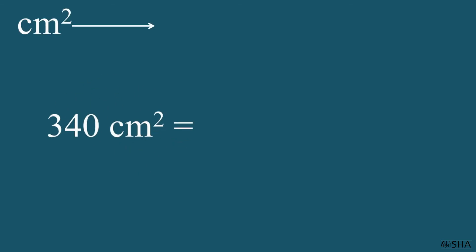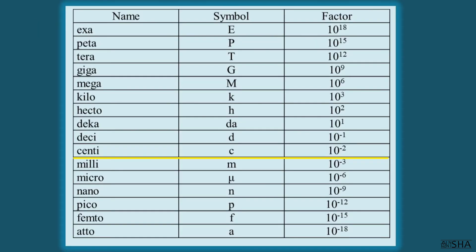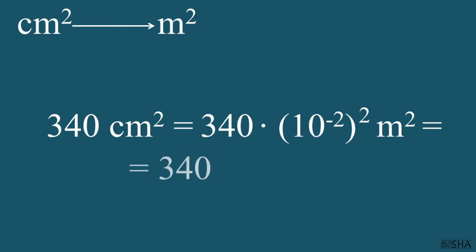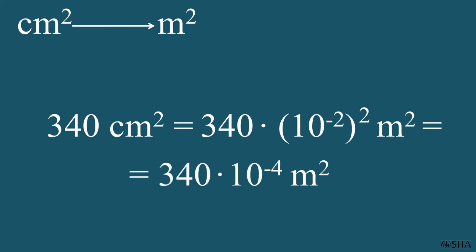Convert 340 square centimeters into square meters. This means that 340 must be multiplied by the factor of the prefix centi, 10 to the negative 2 power, which must be squared. We get 340 times 10 to the negative 4th power square meters. You can stop here, or you can continue and write down the equal sign and 0.034 square meters.